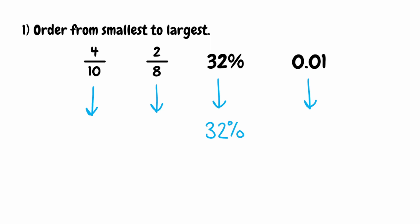Starting from the left, we've got 4 tenths. We want to write that as a percentage. We know that percent means per 100, so we need to find an equivalent fraction to 4 tenths over 100. We multiply the bottom by 10, so we multiply the top by 10 also, giving us 40 over 100. So 4 tenths is equivalent to 40%.